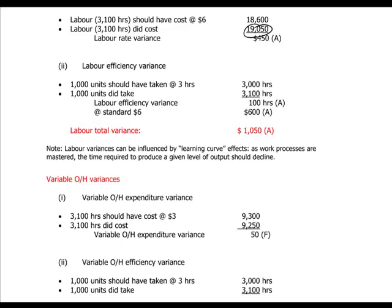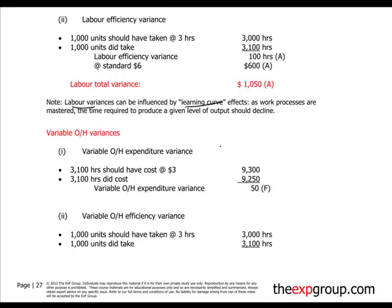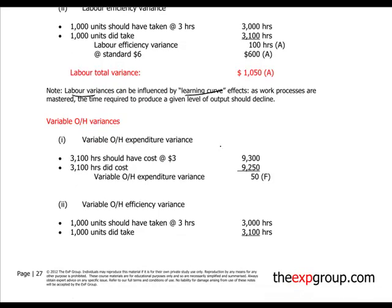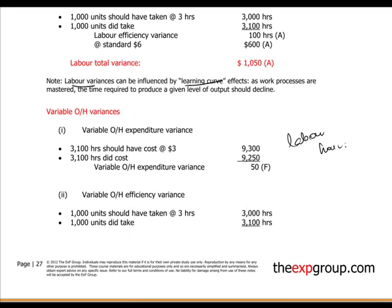Note that labour variance can be influenced by the learning curve effect. Overheads work similarly at F5 level — they are assumed to change according to labour hours. So we assume that variable overheads are absorbed into production based on labour hours, meaning we use the efficiency variance based on the labour hours needed to produce the units.